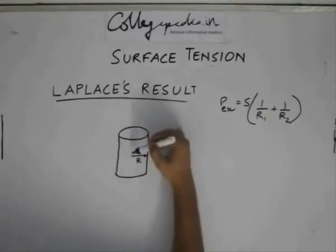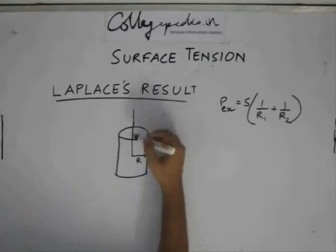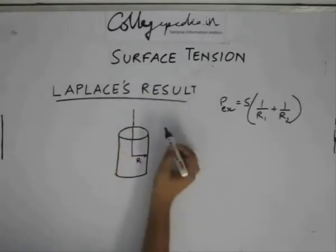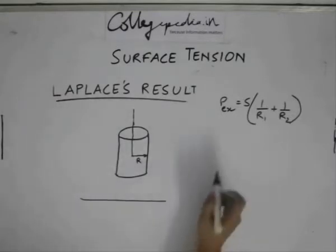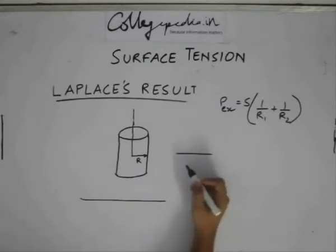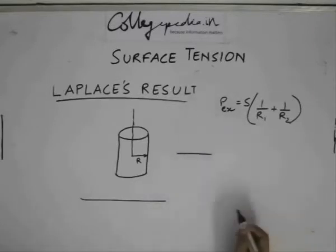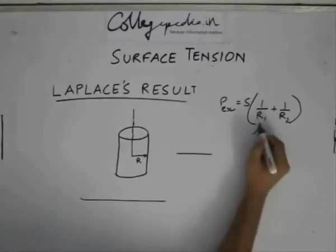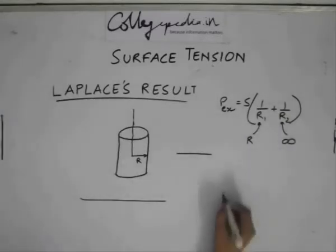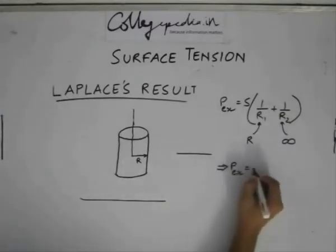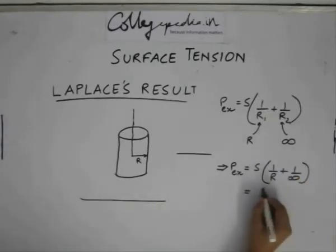Now, this is not actually meeting any surface which is in form of an arc. This is basically meeting a line like this. So any line in space can be said to have a radius of curvature of infinity because this can be considered a part of a circle whose center lies at infinity. So one of the radius can be replaced with r and another radius can be replaced with infinity. So what we have is pxs being equal to s times 1 by r plus 1 by infinity. This gives us the result s by r.